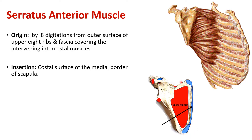Here we can see the costal surface of the scapula and the serratus anterior — this blue colored attachment can be seen on the costal surface of the medial border of the scapula.